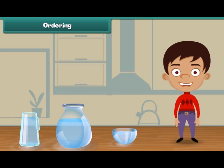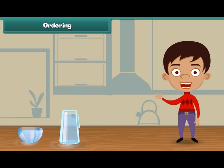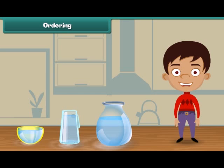Let us now arrange these vessels in an increasing order. Bowl comes first because it holds the least water. The next in the row is jar, as it holds more water than the bowl. At last we place the pot, because it holds more water than the bowl and the jar.